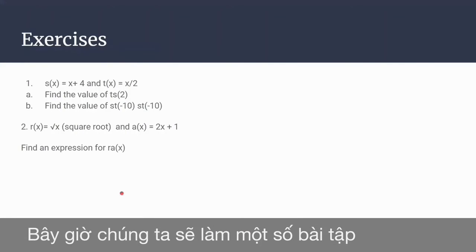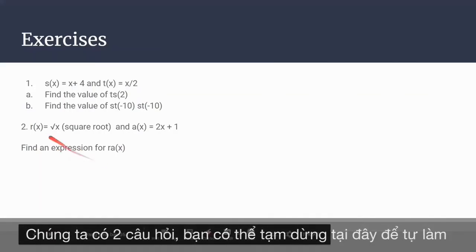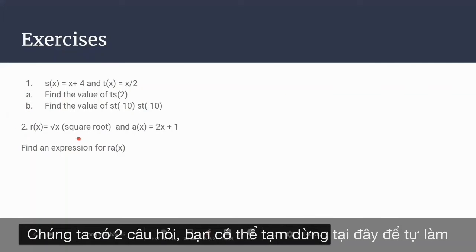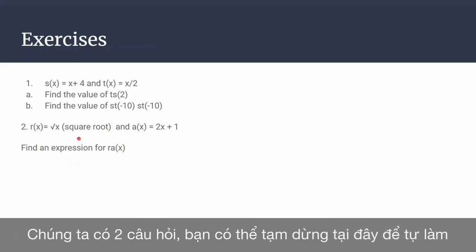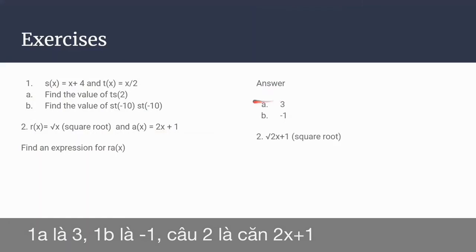Now we go to some exercises. This is question 1 and this is question 2. You can do it by yourself by pausing here. In question 1, 1a is 3 and 1b is minus 1. And in question 2, you get the square root of 2x plus 1.